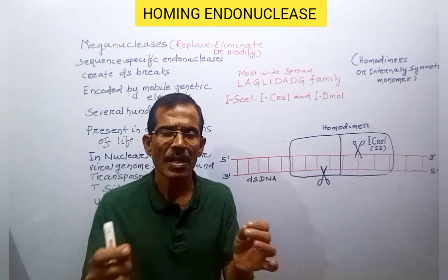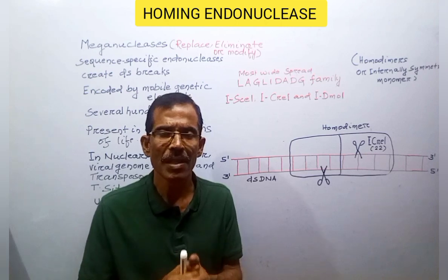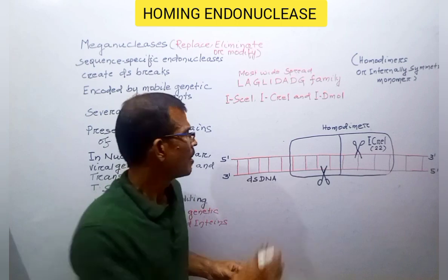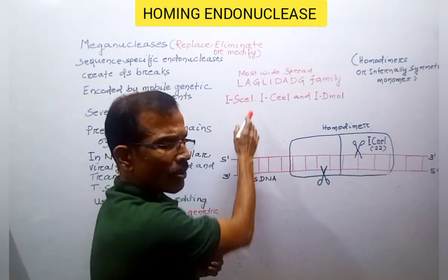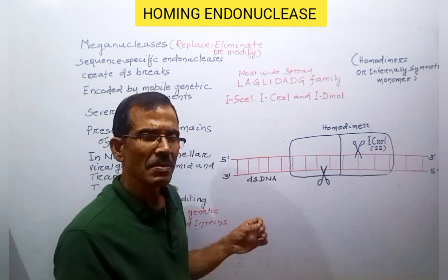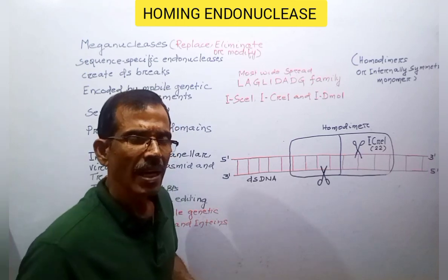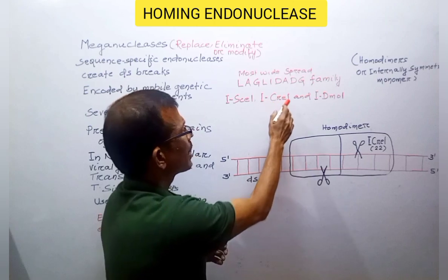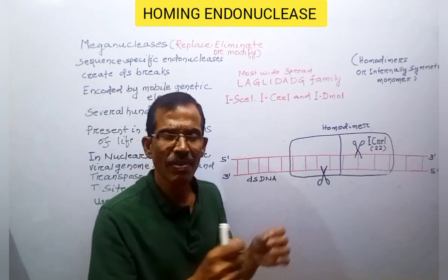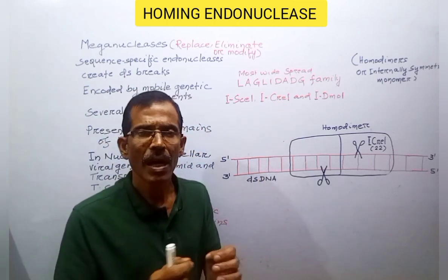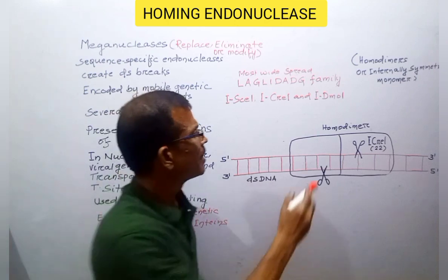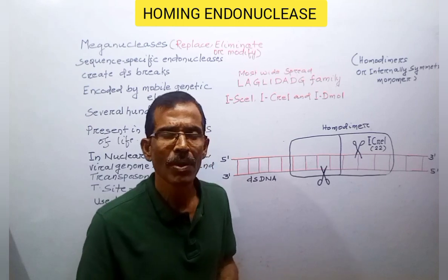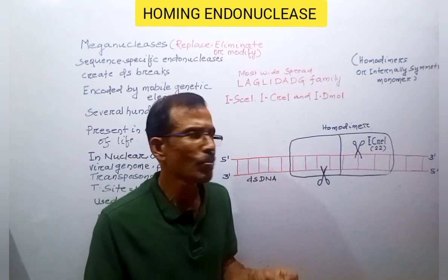The best characterized meganucleases used in research and genome engineering are intron-encoded endonucleases. The first was discovered in Saccharomyces cerevisiae, another was first discovered in Chlamydomonas reinhardtii, and another is an intron-encoded endonuclease in the archaebacterium Sulfurococcus mobilis.